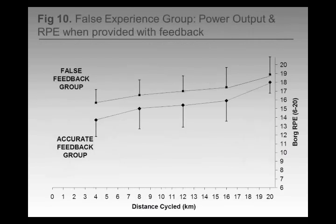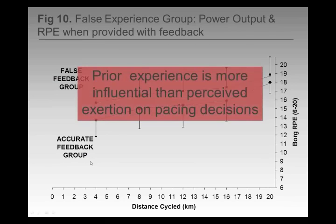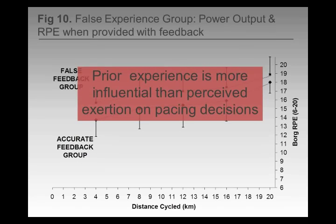One thing I want to talk about is their RPE scores. When you look at the differences in RPE between the false feedback group and the accurate feedback group, at the beginning the difference is almost two broad points. It's almost as if their prior experience is causing them to interpret and make decisions on their feelings in a different way — as if you can dupe these cyclists into changing their pacing strategy based on how they feel, because of a prior experience they've had.